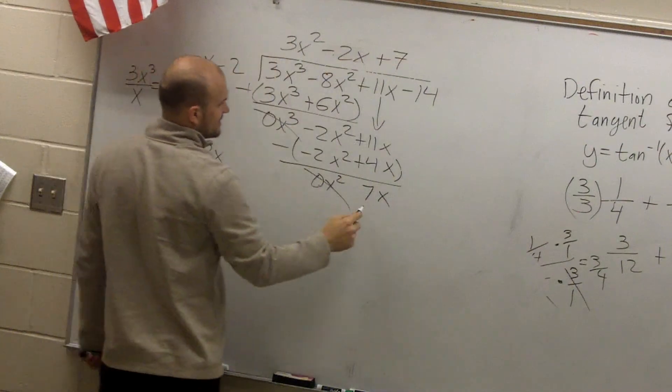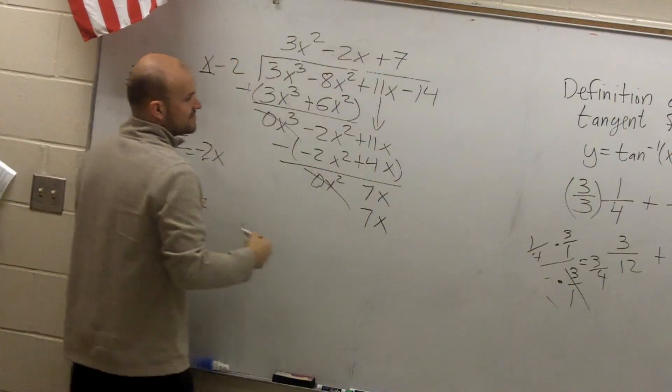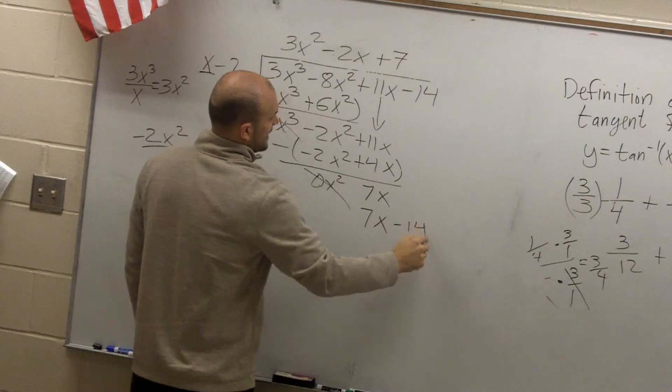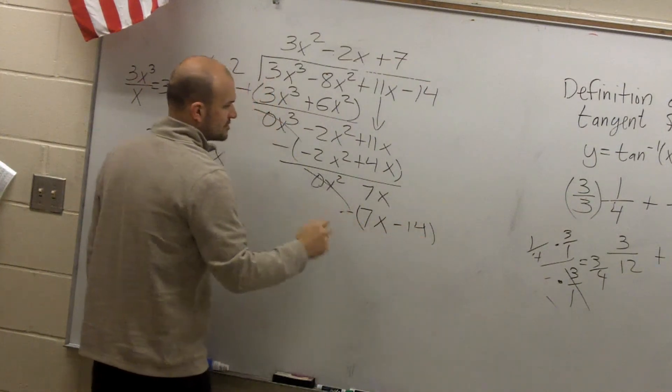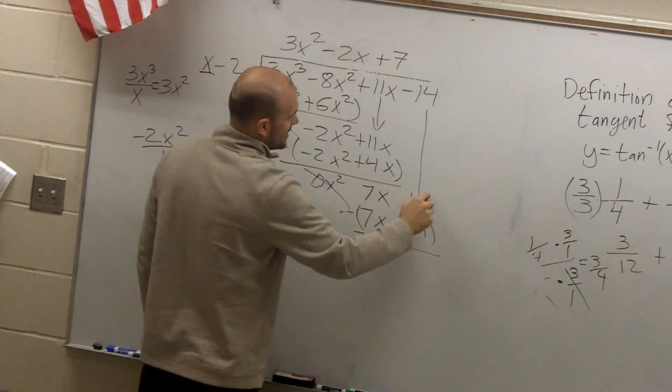7 times x is 7x. 7 times negative 2 is a negative 14. Subtract. Bring down the negative 14.